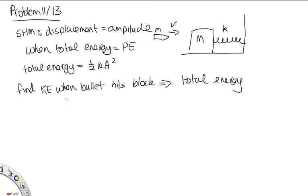To find the kinetic energy, we need to know the velocity of the system at that point. It would be unreasonable to assume that all the kinetic energy from the bullet is directly transferred to the block — it's going to lose energy in some form. But conservation of momentum should hold, so we can use it to find the velocity of the block at that time.